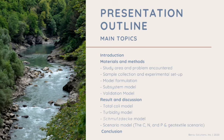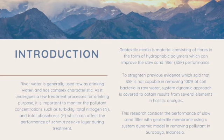including results and discussion as well as the conclusion. River water is generally used raw as drinking water and has complex characteristics as it undergoes a few treatment processes for drinking purpose. It is important to monitor the pollutant concentrations such as turbidity, total nitrogen and total phosphorus which can affect the performance of the smoothing layer during treatment.